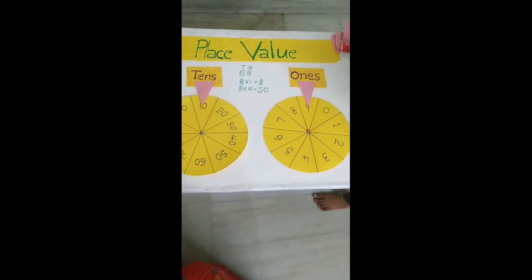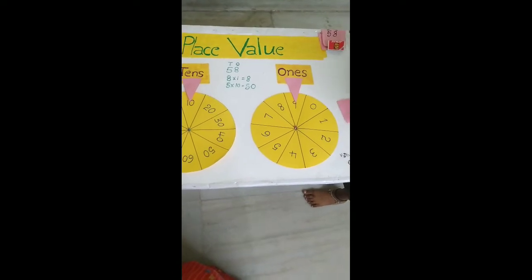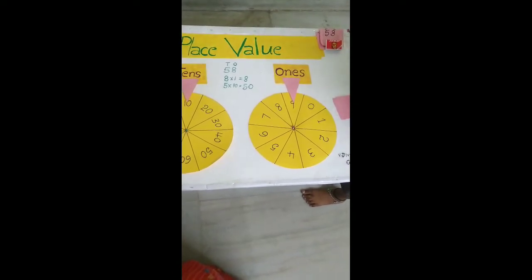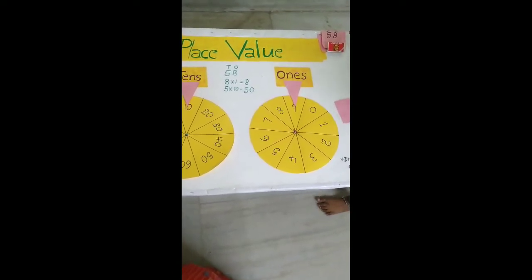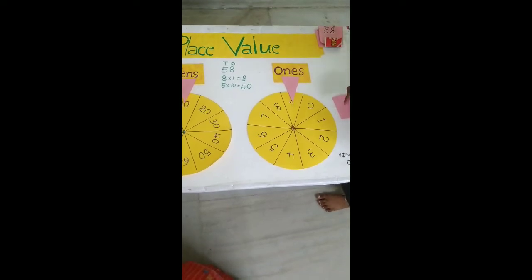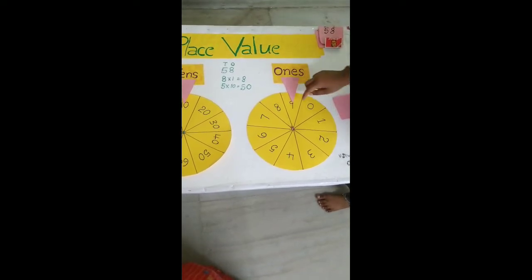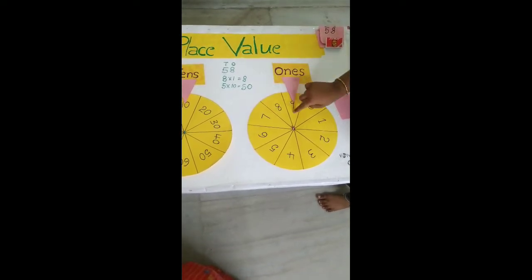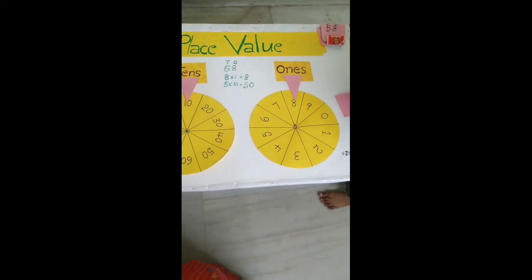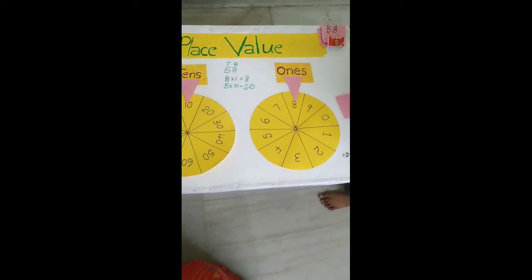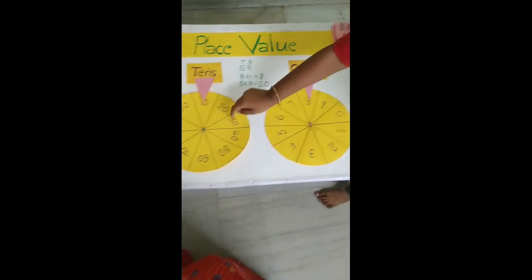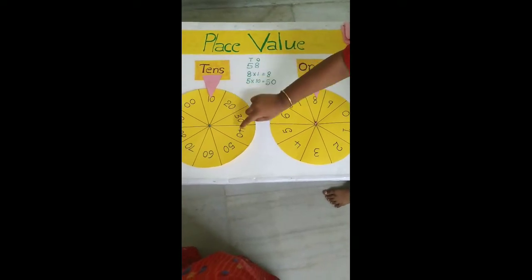Now I am taking one more number, 58. 8 is in the 1's place, so the place value of 8 is 8. 5 is in the 10's place, so the place value of 5 is 50.